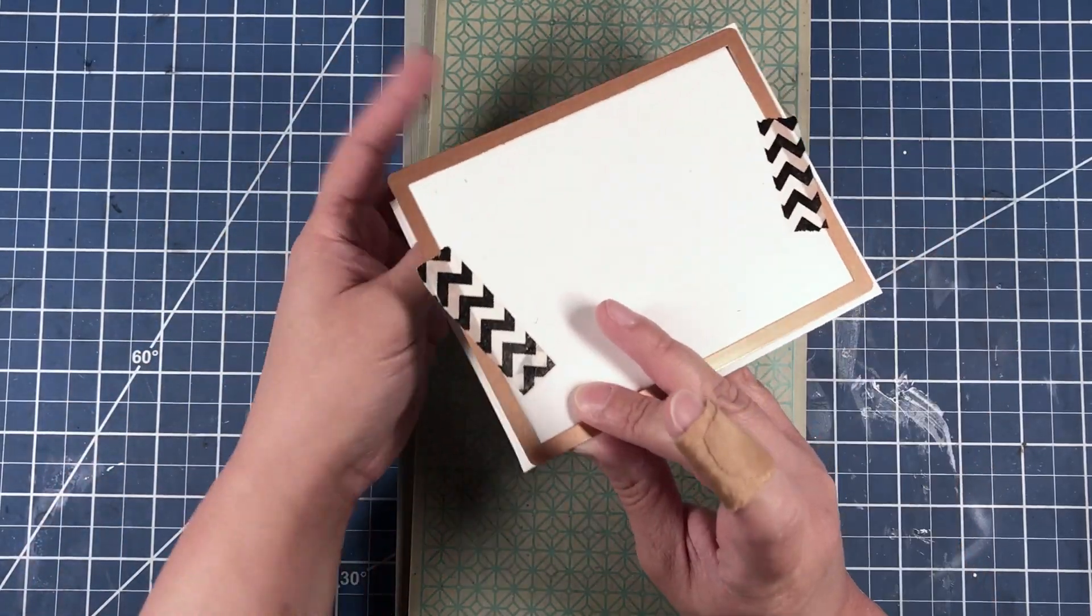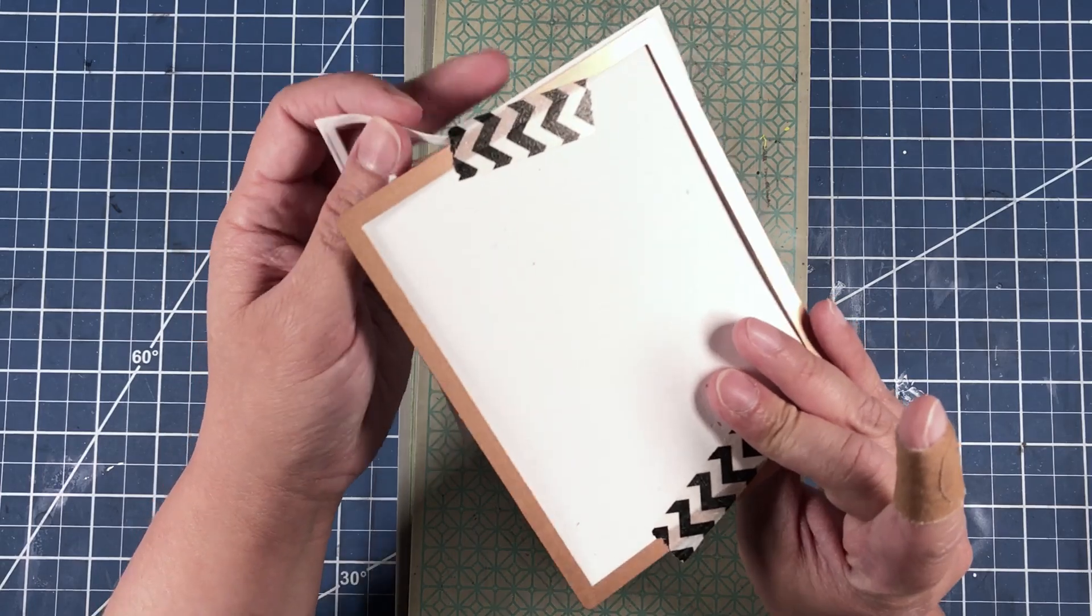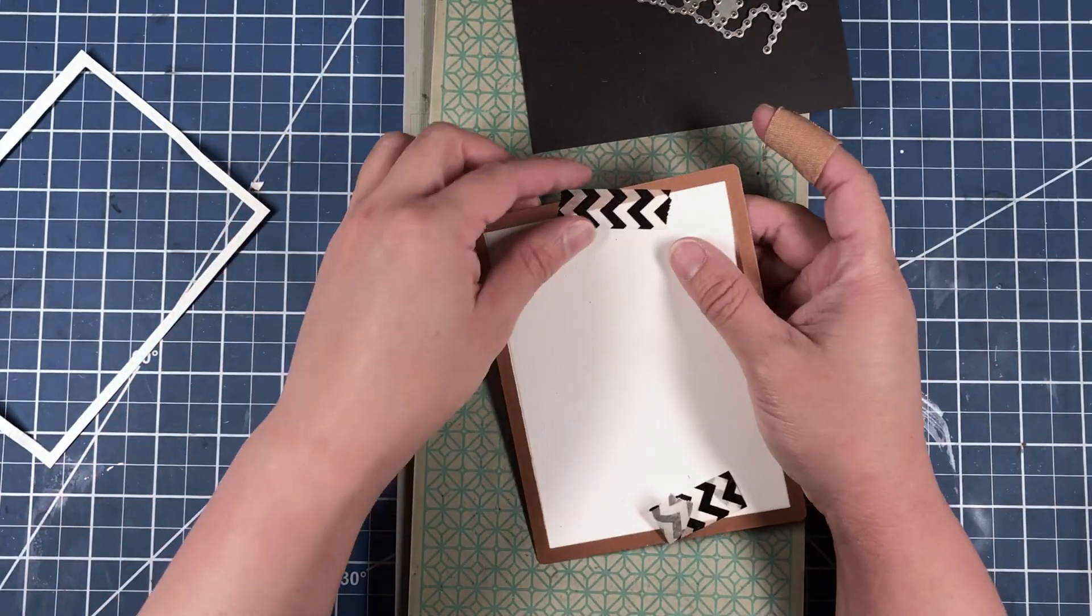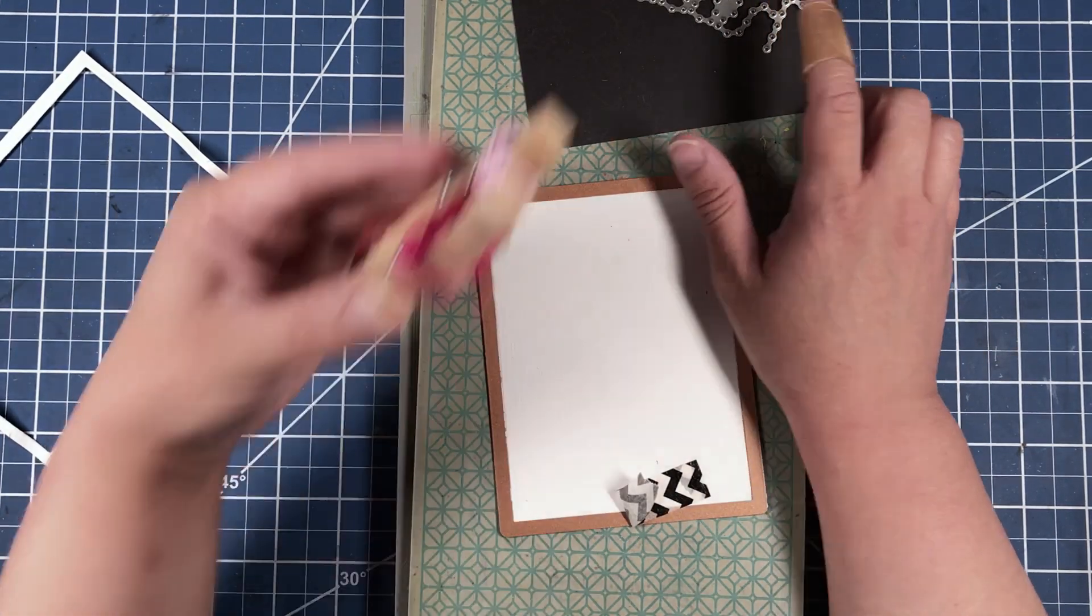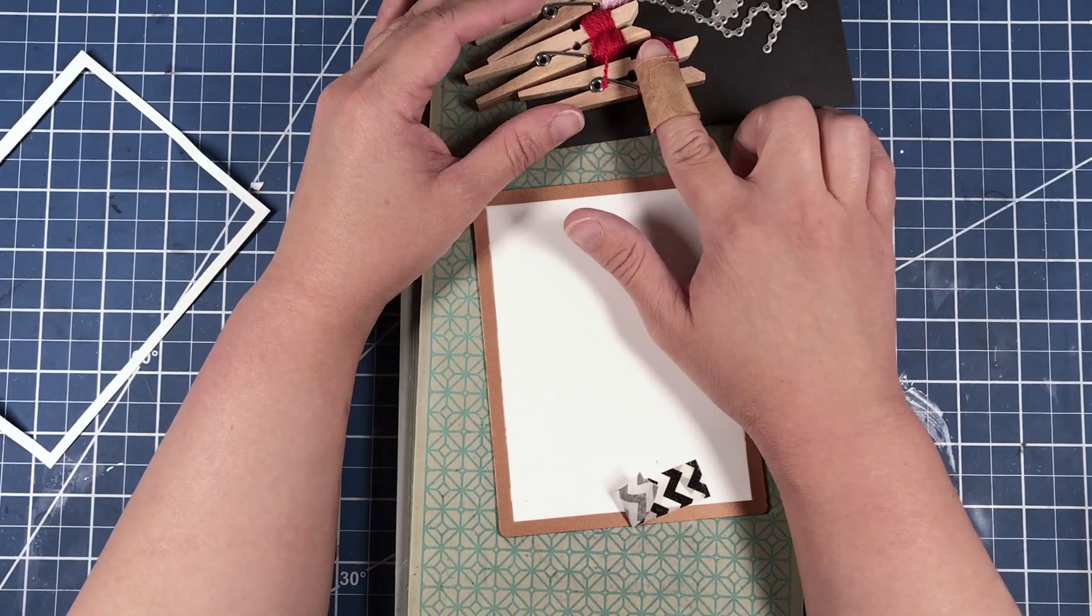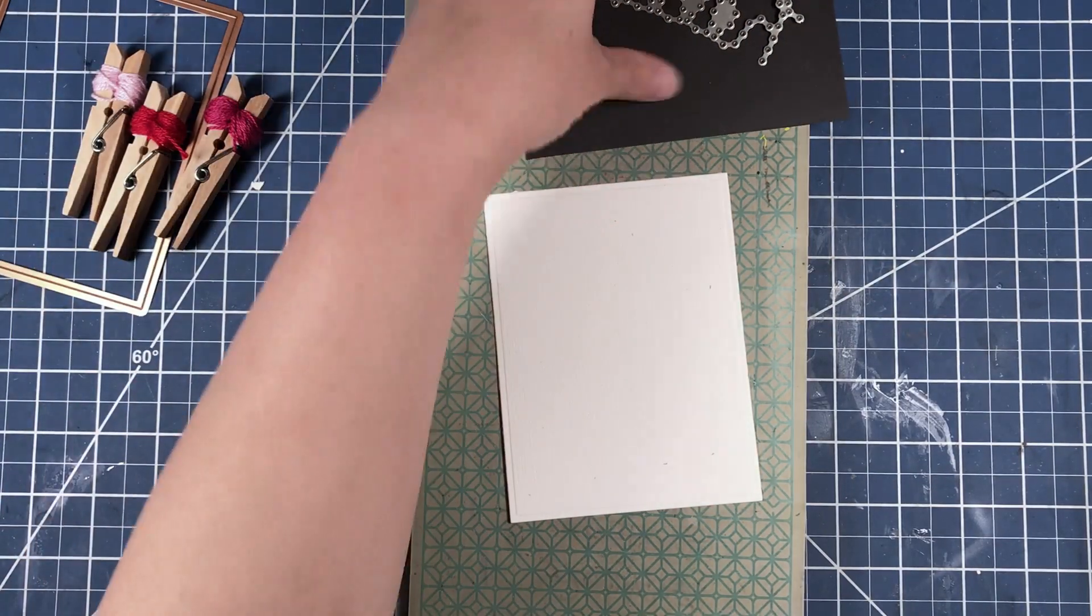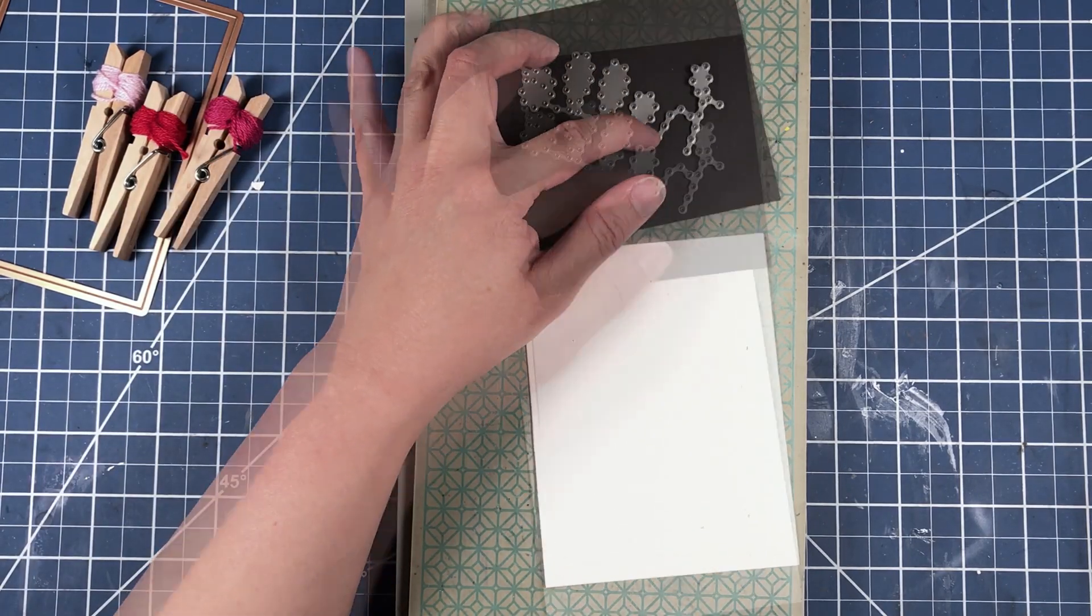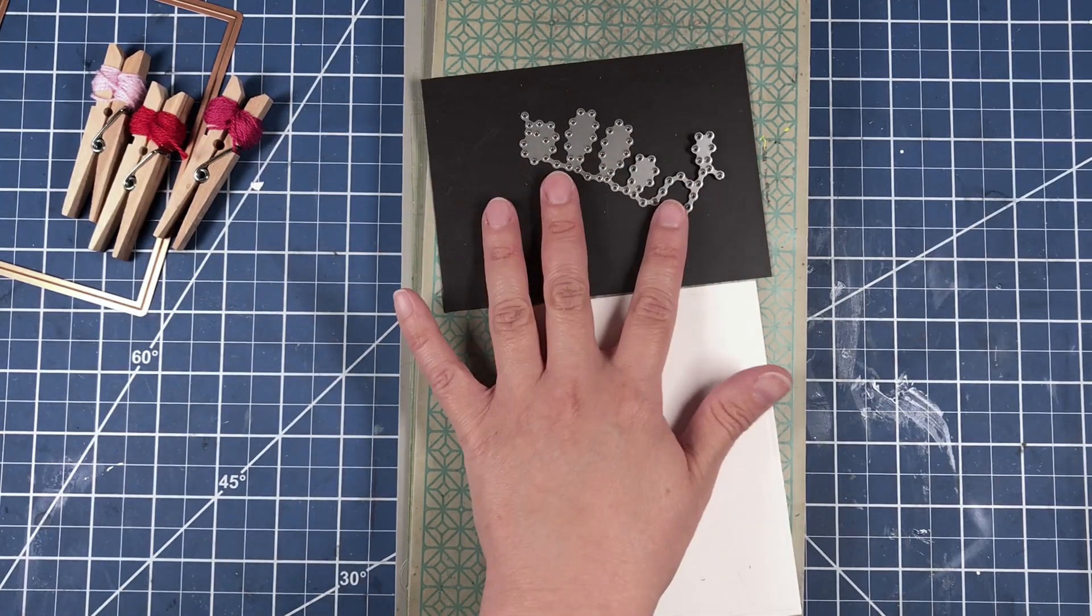So you've got our card front now. Now all we need to do is die cut our sentiment into the front of the panel. We're gonna die cut this three times in order to use these three colors of embroidery thread.